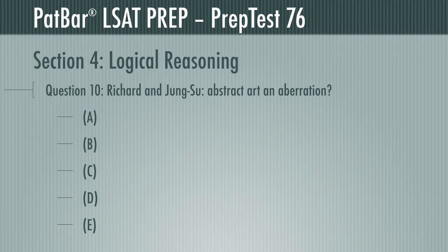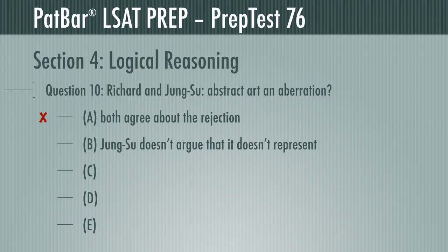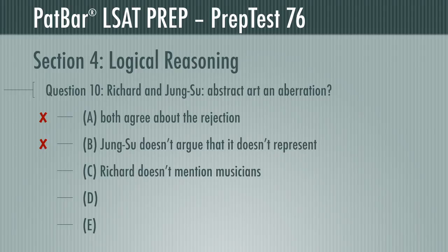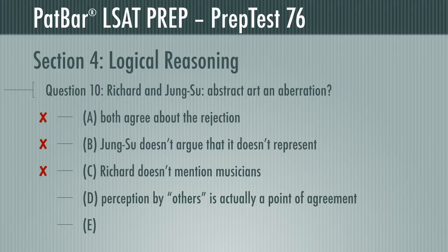We can eliminate A immediately, since they both agree on this point. It can't be B, because Jung Soo doesn't argue representation in general, but of what abstract art represents. C may or may not be factual, but Richard doesn't mention musicians. Did you pick D? So have a lot of people, and it's wrong. Jung Soo specifically makes the argument for the mainstream whatever others might come to say, meaning they agree over the perception by others, and D is incorrect.